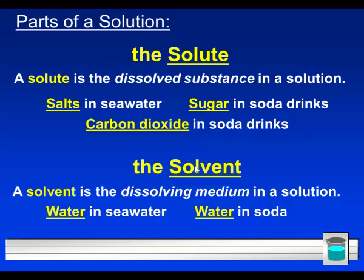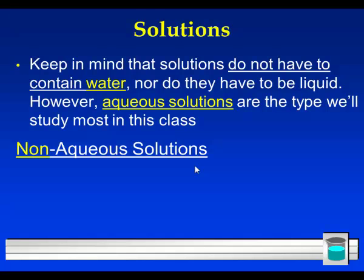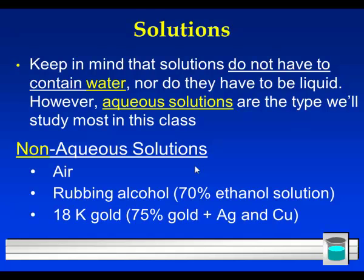The solute or solvent in a solution like air is arbitrary. There's nitrogen and oxygen mainly in the air, plus lots of other trace gases, and what we call the solvent is completely up to us. Nitrogen would make sense because it's in the highest concentration, but it doesn't have to be. When dealing with water and stuff dissolved in water, water will always be the solvent. That's an example of a non-aqueous solution — we'll focus on aqueous solutions in introductory chemistry, but lots of other solutions exist.